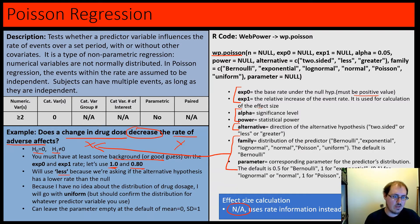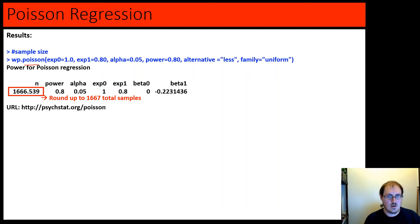I have no idea about the distribution of drug dosage, so I'm going with uniform - that's one of our options. It's the most conservative and doesn't make many assumptions, so it's the weakest but not bad if you want to be conservative. You should confirm whatever distribution you actually have. I'll default to parameters of mean zero and standard deviation one. I don't actually have to set these out if they're at default. We use wp.poisson with our rates, alpha, power, alternative, and family, and it gives us n for a total of 1667 samples.